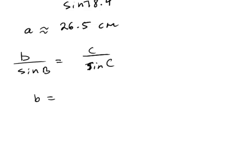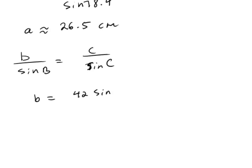We see that B is equal to side C, which is 42, times the sine of B—B was 63.4 degrees—divided by the sine of 78.4. We find that B is approximately 38.3 centimeters.